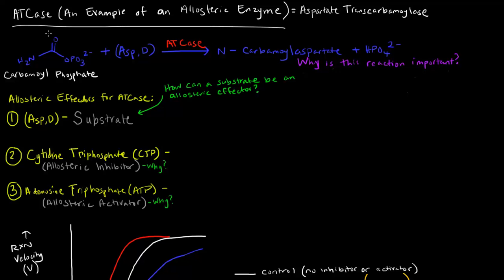In the last video, we talked about allosteric regulation and allosteric enzymes. In this video, I want to give an example of an allosteric enzyme, which is ATCase, short for aspartate transcarbamoylase. This enzyme catalyzes the production of N-carbamoyl aspartate and HPO4²⁻ from its substrate aspartate and carbamoyl phosphate, which is this thing I've drawn here.